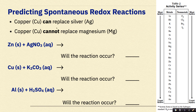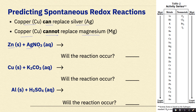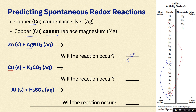Predicting spontaneous redox reactions. Copper can replace silver because it is above silver on Table J. Copper cannot replace magnesium because magnesium is way above copper — you cannot go in the opposite direction. Let's predict whether these reactions will occur. Can Zn replace Ag in AgNO₃? Here's Zn and here is Ag — Zn is above Ag, so yes, this will occur. Can Cu replace the potassium in potassium carbonate? Here is Cu and here is potassium way up there — Cu is less active than potassium, so no, it cannot.